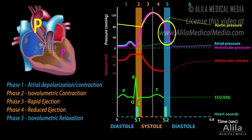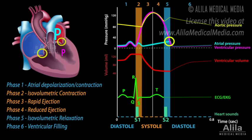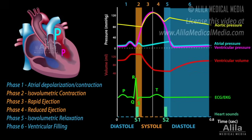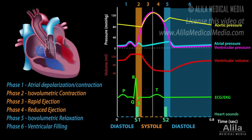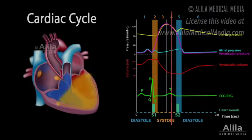Ventricular pressure drops rapidly, but their volumes remain unchanged. Meanwhile, the atria are being filled with blood and atrial pressures rise slowly. Ventricular filling starts when ventricular pressures drop below atrial pressures, causing the AV valve to open, allowing blood to flow down the ventricles passively. The atria contract to finish the filling phase, and the cycle repeats itself.